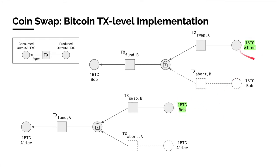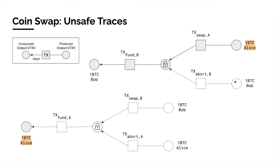Notice that not all contract execution traces are safe. In this example, Bob has initiated the deposit first, allowing Alice to immediately withdraw with her swap transaction. Even though Alice has released her publication proof, Alice has not committed any funds to the contract, thereby leaving Bob empty. This example motivates the need for verification of contracts implemented at the transaction level, and to formalize safe strategies for an actor to identify safe and unsafe traces.